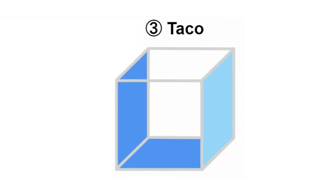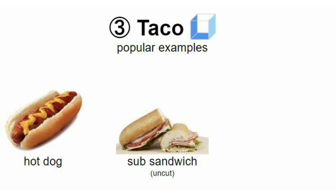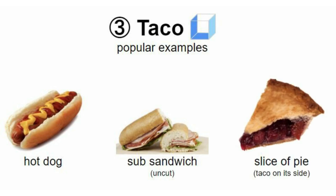Number three — we have the taco, where you've got stuff on the bottom and on the sides. Popular examples of a taco include a hot dog. So a hot dog is not so much a sandwich as it is a taco. You've also got a sub sandwich uncut, and a slice of fruit pie — it's a taco on its side, basically. If you held it in your hand on the side, a pie would be a taco.